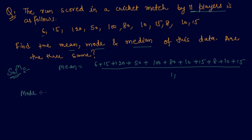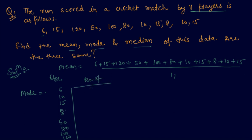To find the mode, I will make a frequency table. The observations are: 6, 10, 15, 8, 15, 15, 50, 80, 100, 120. Six appears one time, ten appears two times, fifteen appears three times, eight appears one time — and so on up to eleven observations total. Fifteen appears the most, so the mode is fifteen.